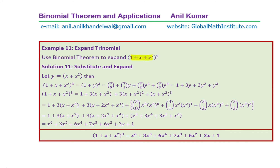Example 11: how do we expand a trinomial? For (1+x+x²)³, the idea is to club two of the terms. Keep 1 separate and club x and x² by substituting Y = x+x². This makes it (1+Y)³, which we then expand and simplify. Replace Y with x+x², expand, and simplify to get the result. Sometimes you may need to expand with trinomials — clubbing two of them makes a binomial.